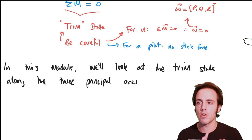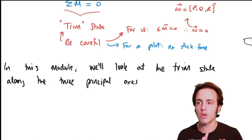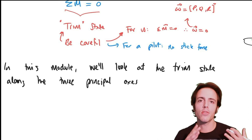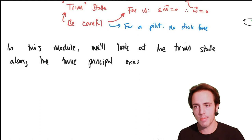In this module, we're going to look along the three principal axes of our aircraft — x, y, and z — and see how we can make sure the aircraft is trimmed in each of those. Once we've got this concept of trim, we're then going to look at stability.